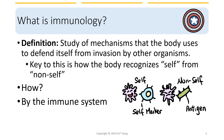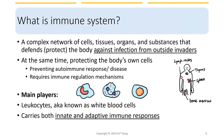This recognition is done by the immune system. The immune system is a very complex system of cells, tissues, organs, and substances that defend or protect the body against infection from outside invaders, while at the same time protecting the body's own cells. That means protecting from autoimmune responses and diseases, and it also requires an immune mechanism to regulate the differences between self and non-self.